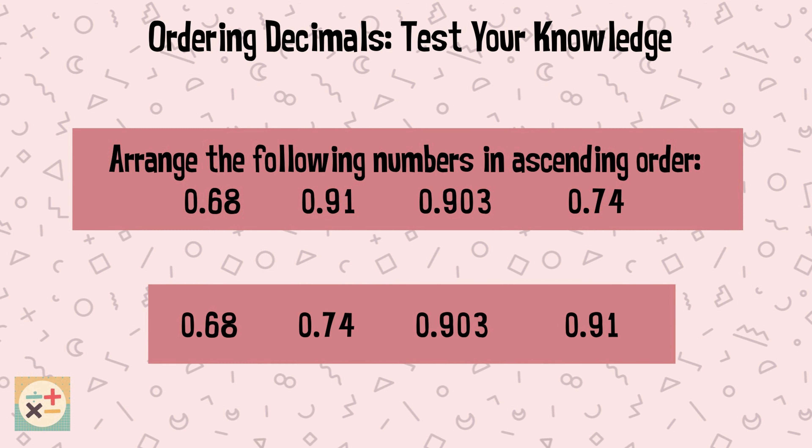In ascending order the numbers are 0.68, 0.74, 0.903, and 0.91.